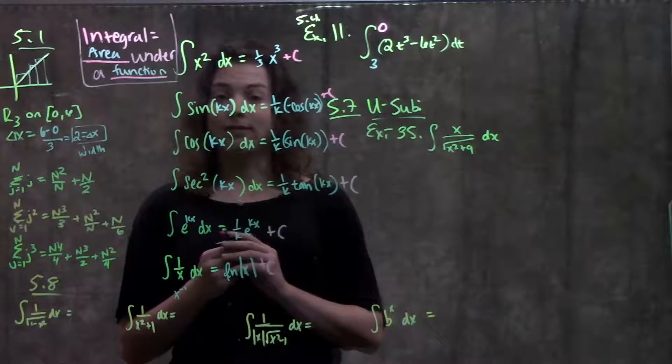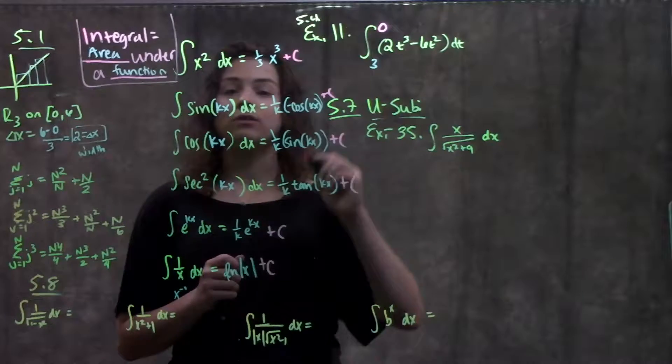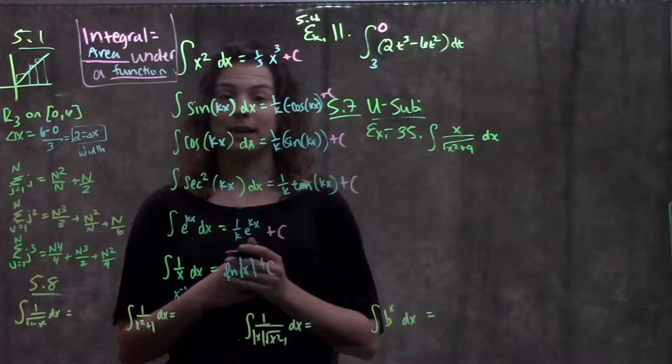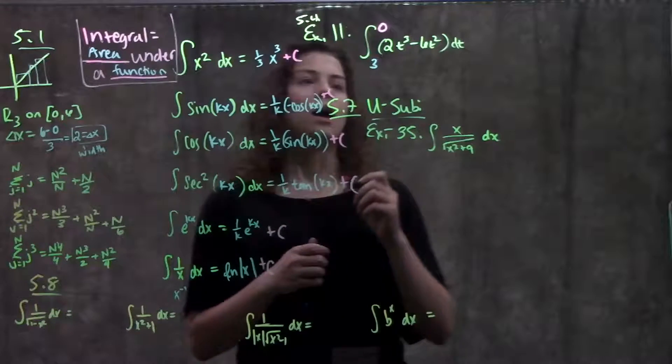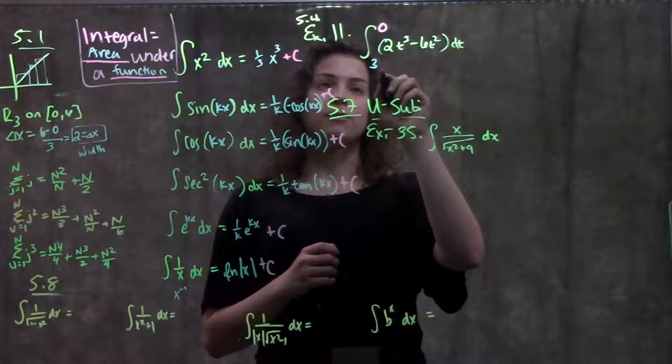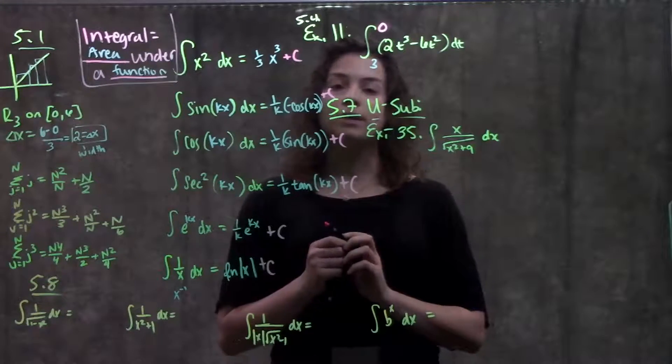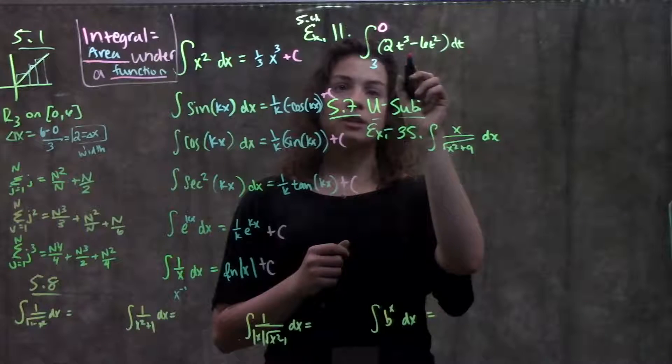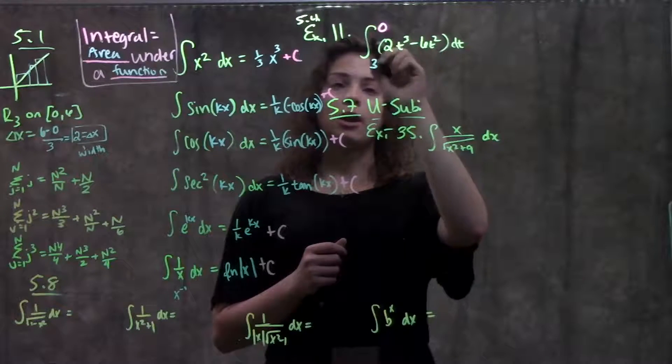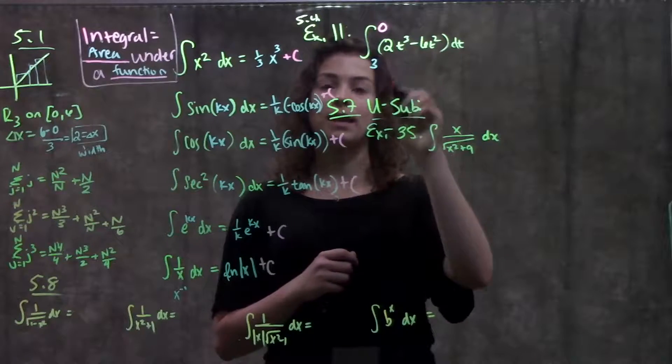But we also learned about definite integrals. Definite integrals, really similar, except now we have actual values on our integral that they're interested in. For this function right here, they're interested in the value from 3 to 0 of this function. What we do here is we find the integral of this function, and then we're going to plug in our top number into the function, minus whatever we get when we plug in this bottom number.